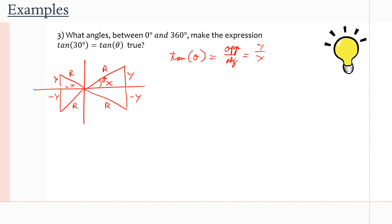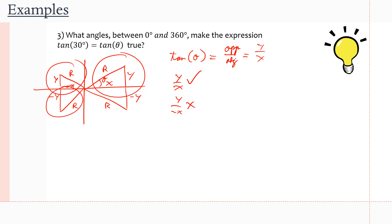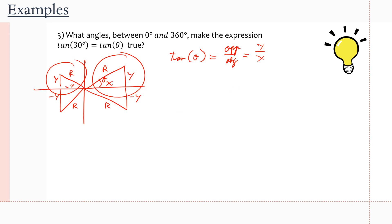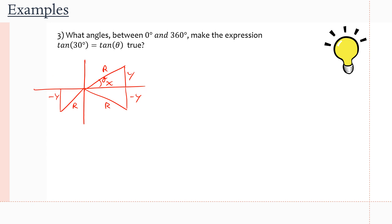When does Y over X become positive? When Y and X are both positive, or when Y and X are both negative. In quadrant one, tan is Y over X — that's positive. In quadrant two, tan is Y over negative X — that's negative. In quadrant three, tan is negative Y over negative X — the negatives cancel, giving a positive ratio. In quadrant four, tan is negative Y over X — that's negative. So the quadrants we need are quadrant one and quadrant three.